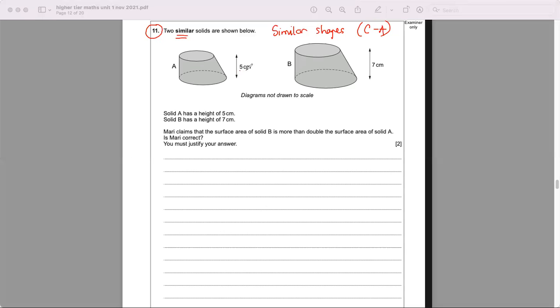Solid A has a height of five centimeters and B has a height of seven centimeters, and you can see B is bigger than A. Mary claims that the surface area of solid B is more than double the surface area of solid A. Is she correct? And you must justify your answer.